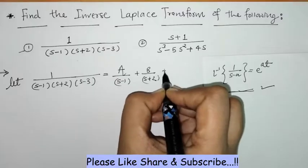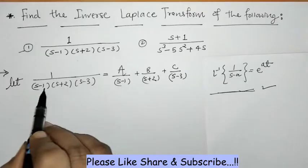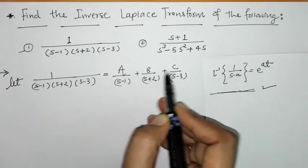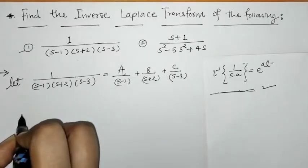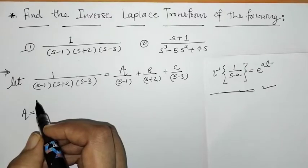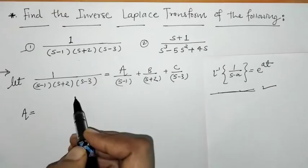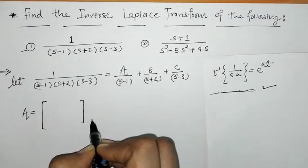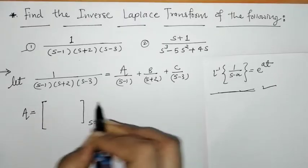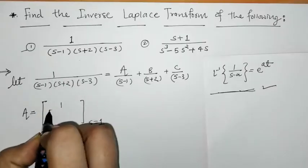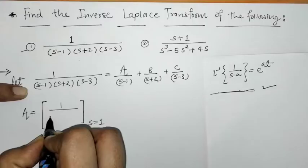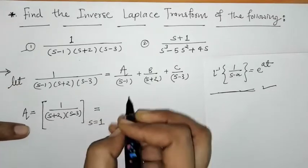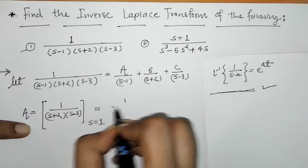Here we have three non-repeated linear factors, so we take three constants A, B, C. For finding A, we put s minus 1 equals 0, so s equals 1. We eliminate the factor (s minus 1), leaving the remaining factors (s plus 2) and (s minus 3), and then substitute s equals 1 on this side.